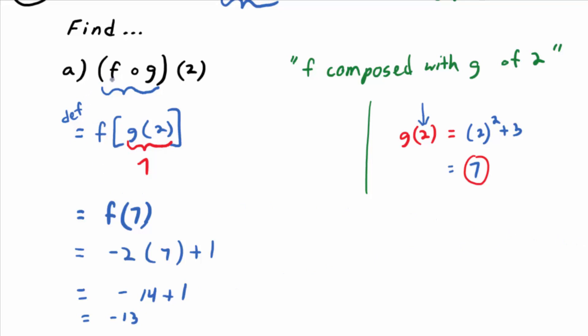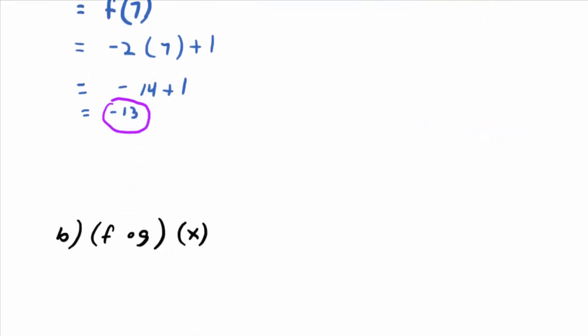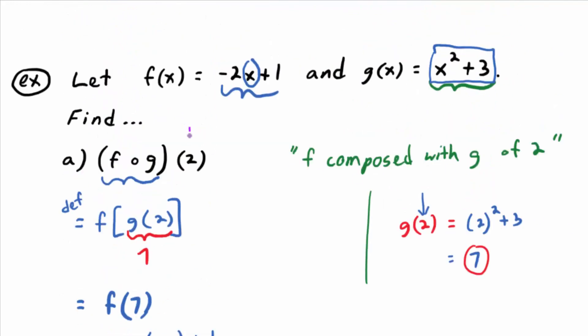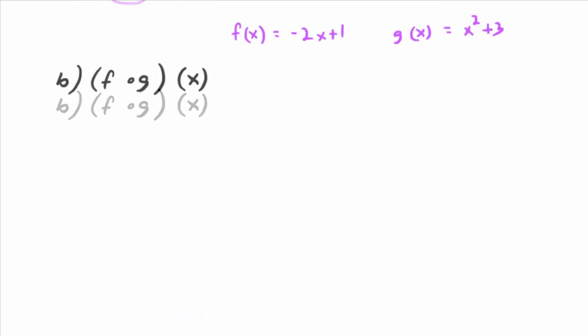So, in other words, f composed with g of 2 is negative 13. If you work it from the inside out, you get to familiar territory function notation real quick. Now, most of the problems you'll see will probably not give you a specific input, like 2. Most of them, the input will be x, and you have to figure out what the formula is.